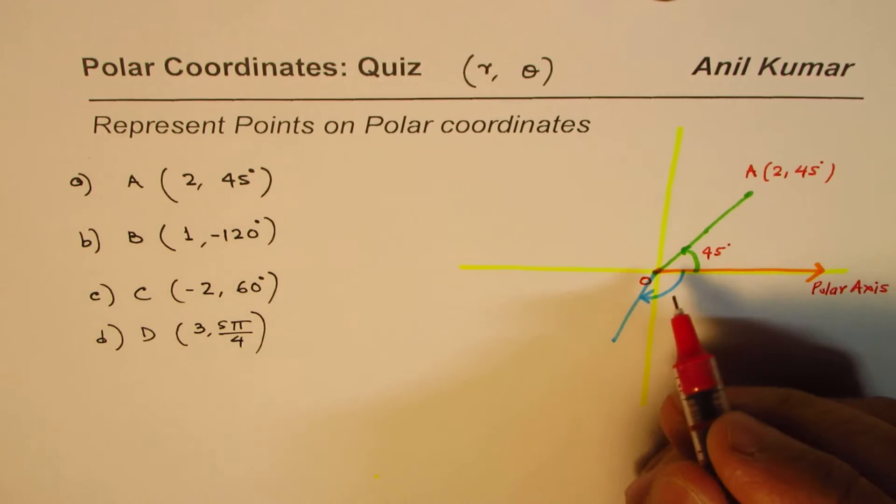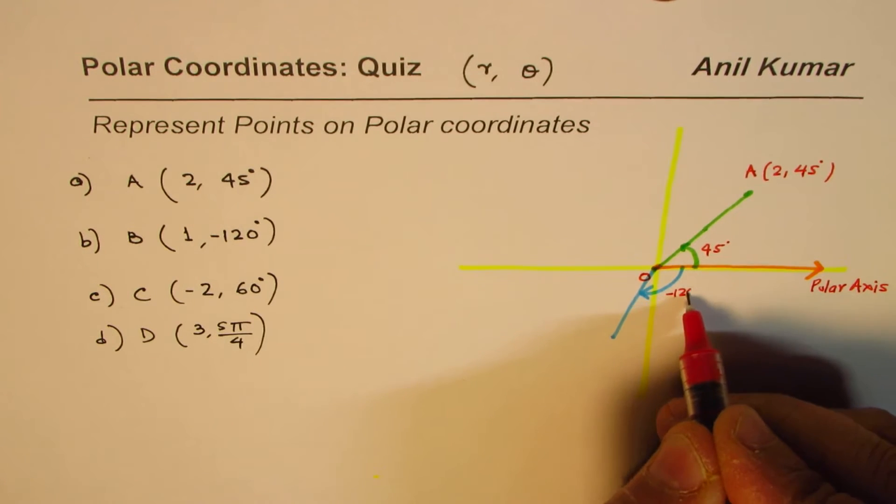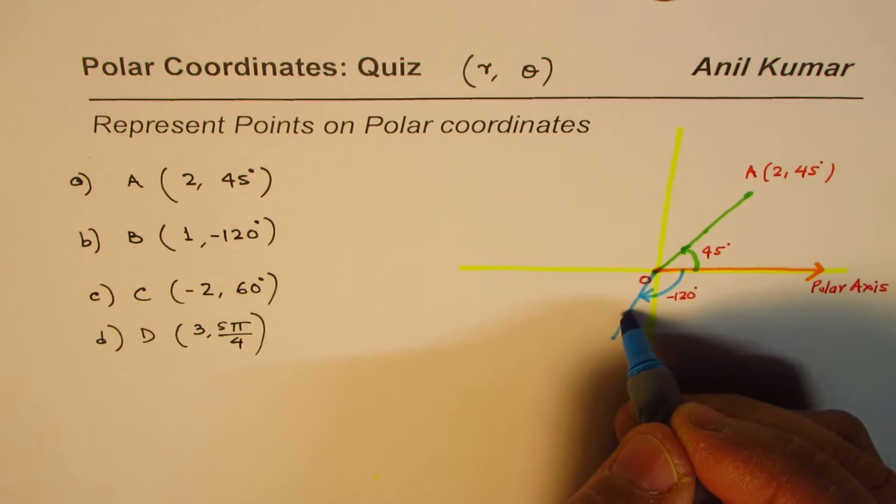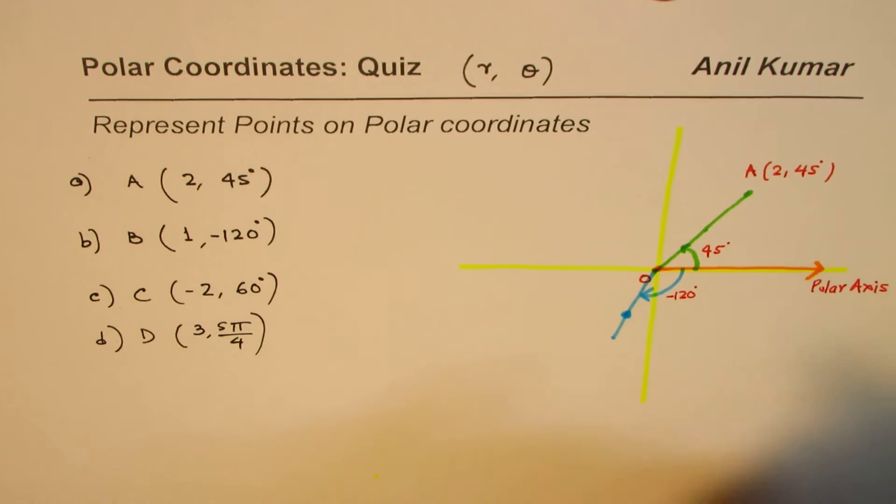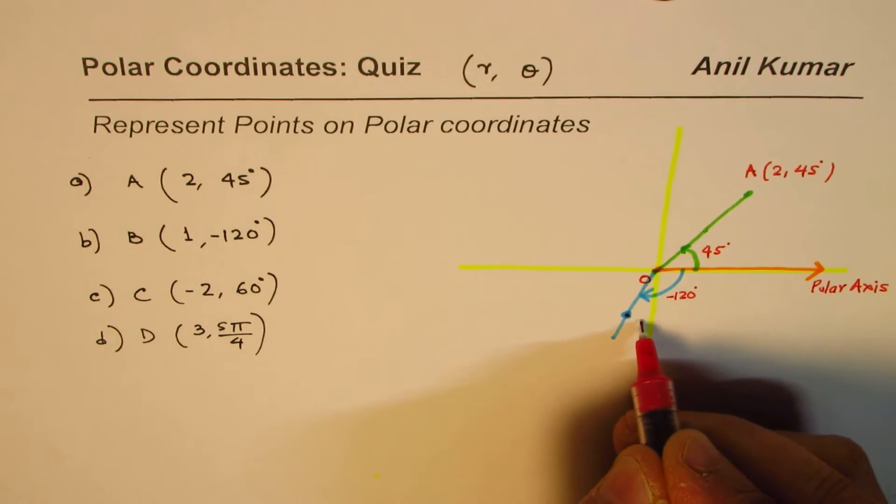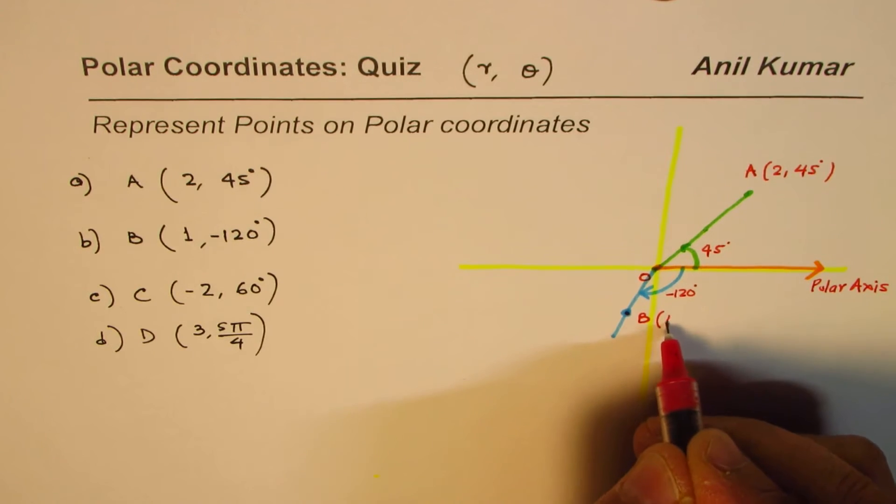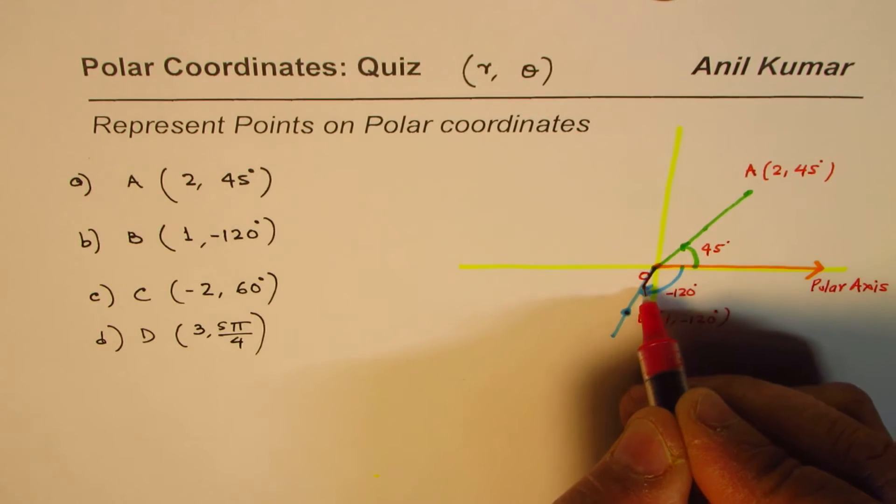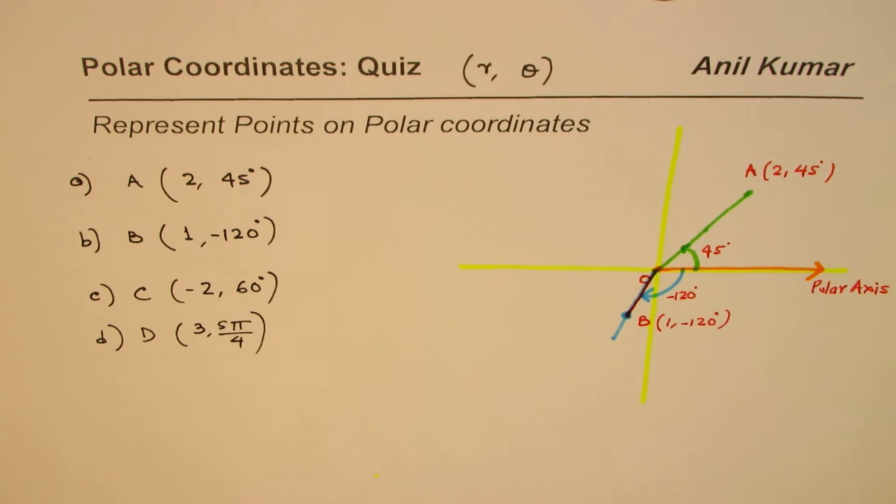Now magnitude is one unit, so along this line that is my one unit. So this is the point which I am saying is B for me. This is the point B, and I'm saying B is (1, -120°). So this segment here represents the point B.